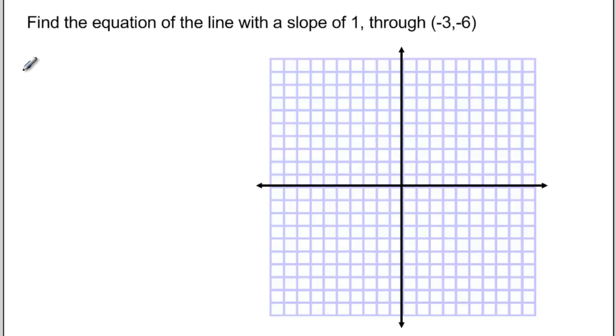Let's try a problem. We want to find the equation of a line with a slope of 1 through negative 3 and negative 6. We know that our equation needs to be of the form y equals mx plus b. We're told that the slope of this line is 1, so m is equal to 1. So now we're looking at the equation y equals x plus b.